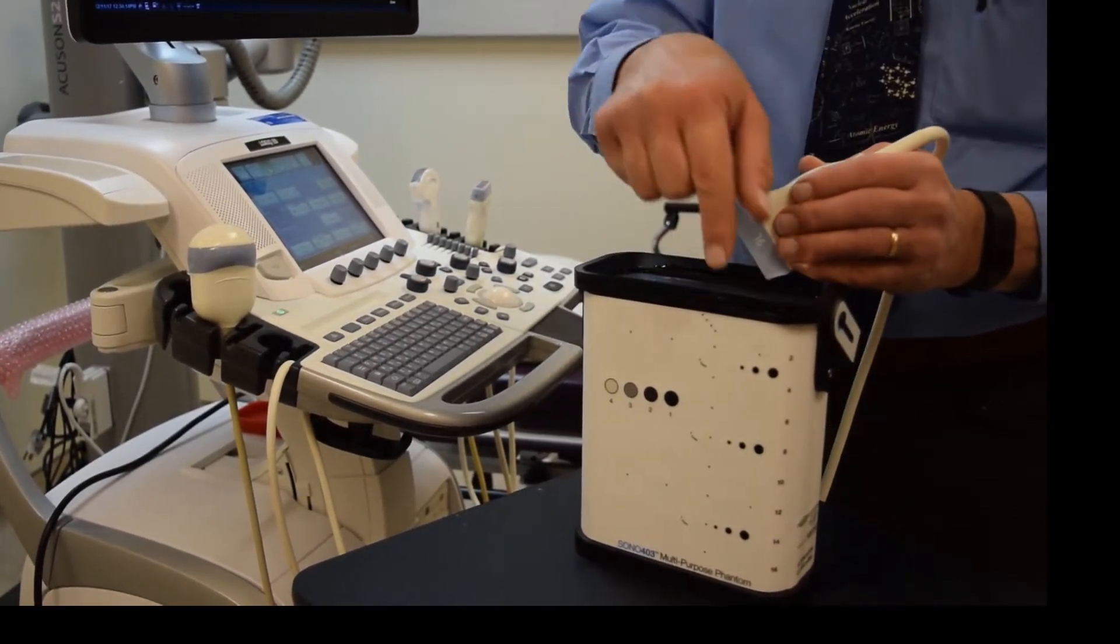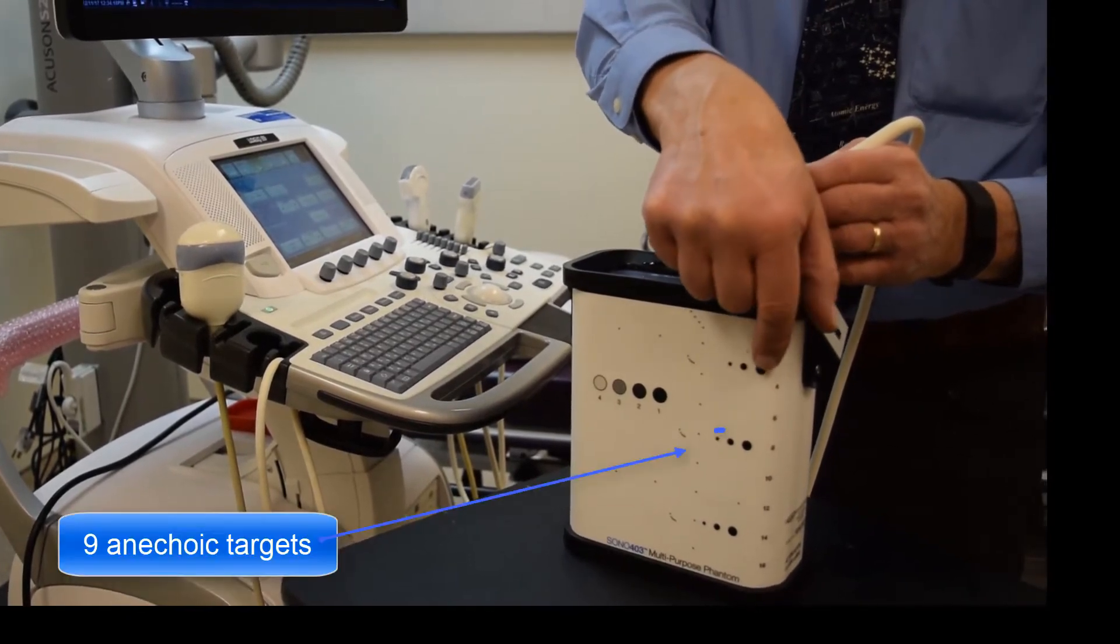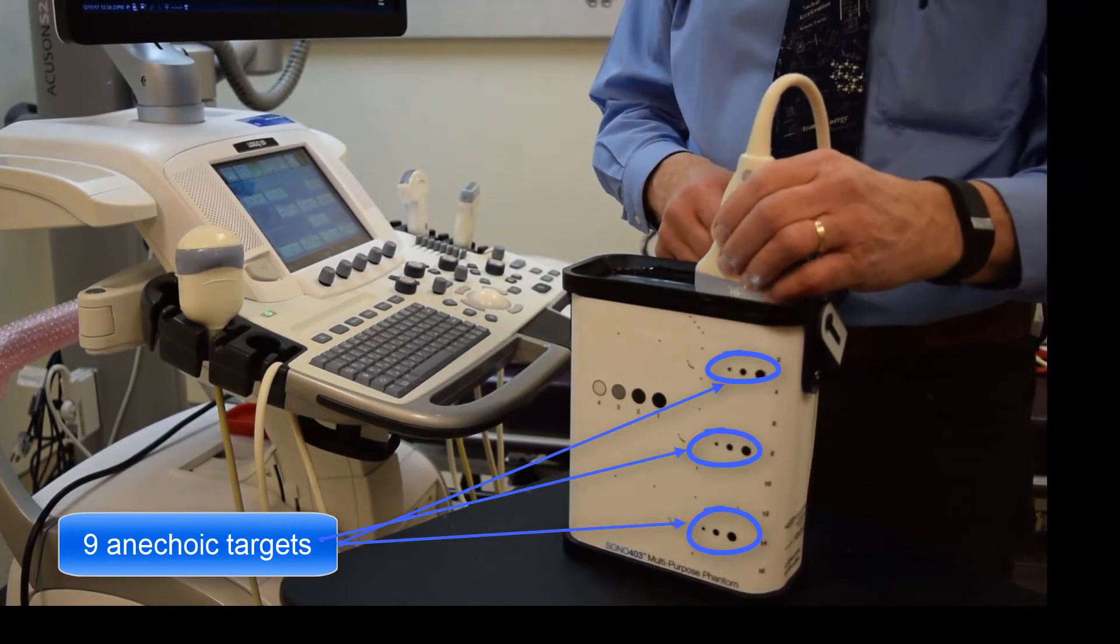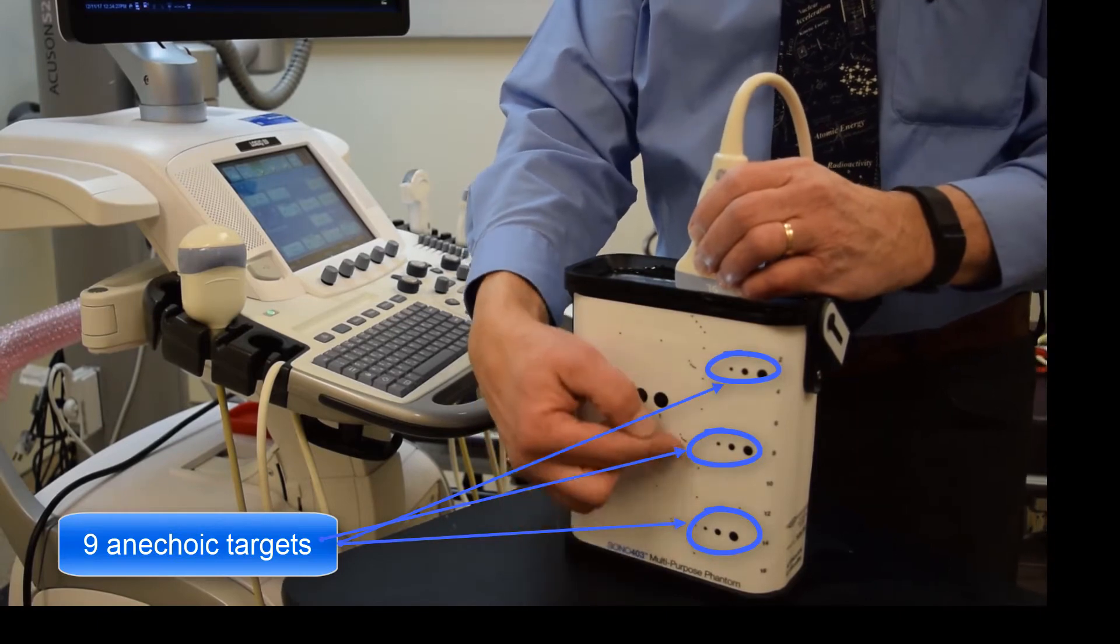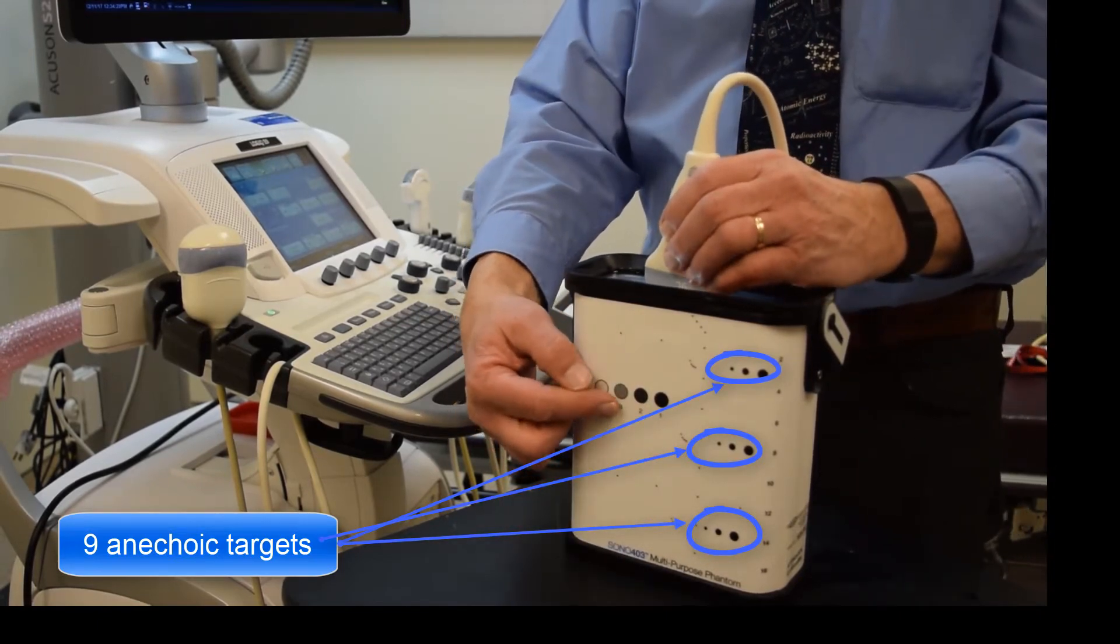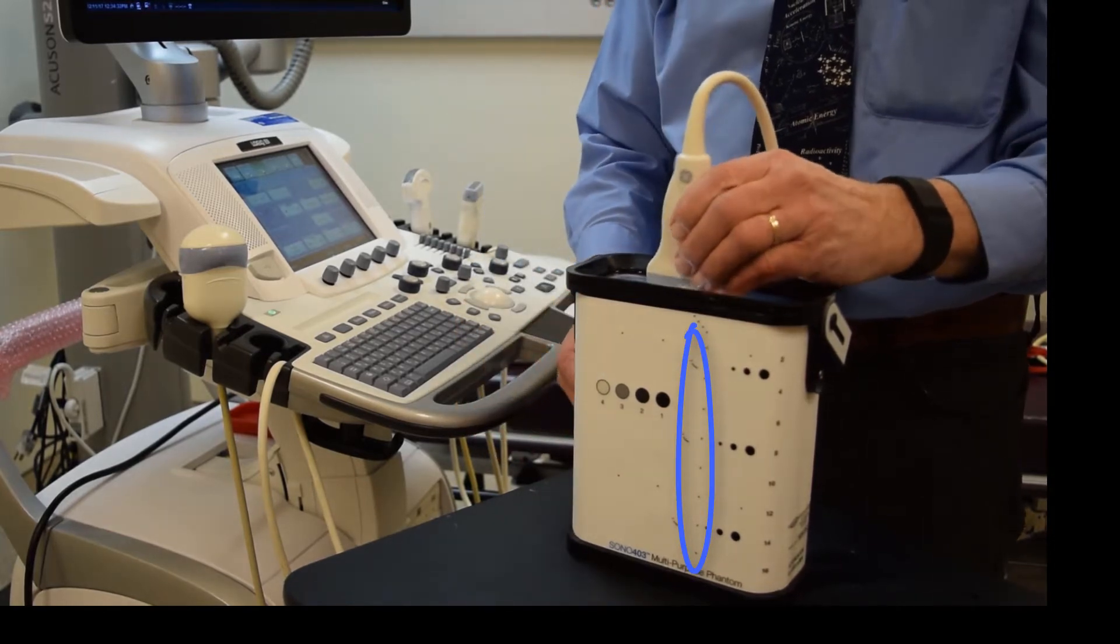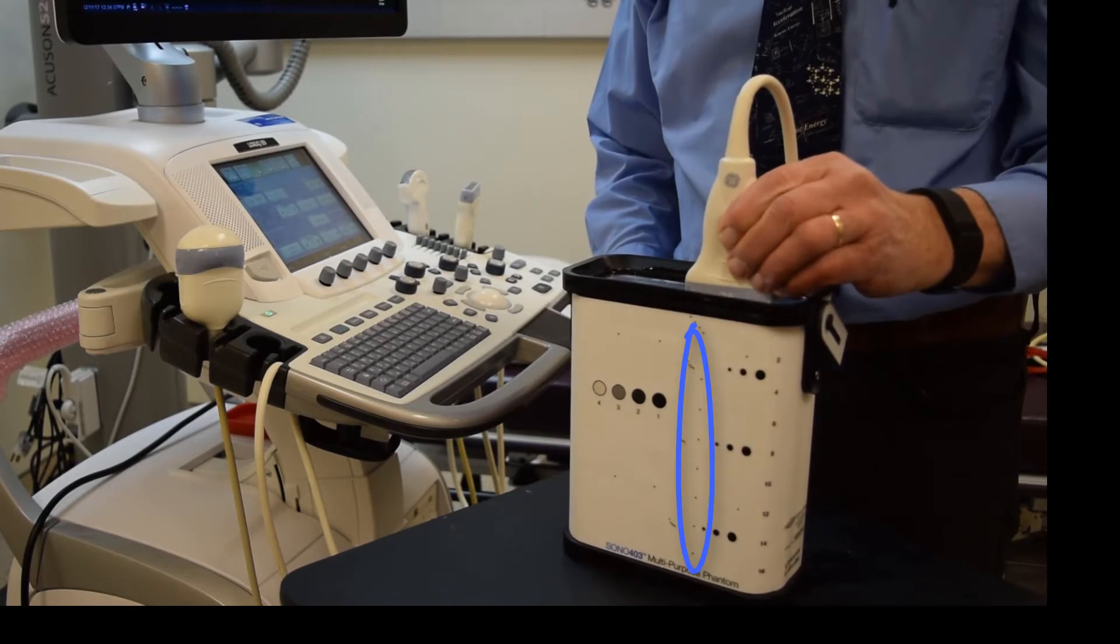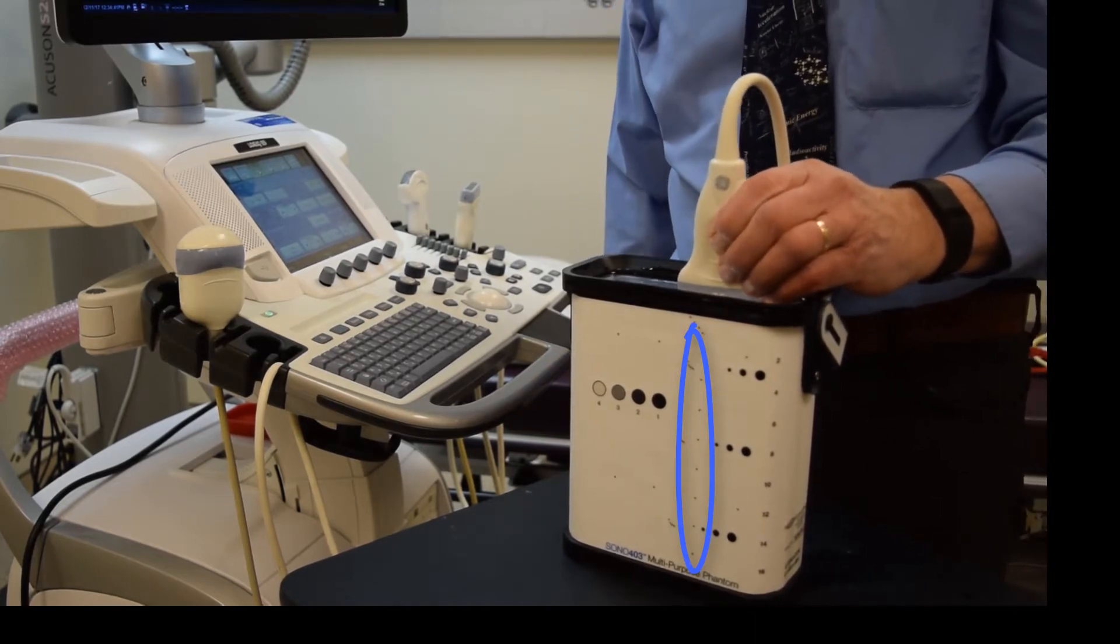There are a number of interesting objects inside the tissue-mimicking material. First, there are three groups of three anechoic cylinders whose axes are perpendicular to the side walls of the phantom. These have different sizes ranging from 6 millimeters to 2 millimeters in diameter. The phantom has a vertical row of nylon fiber targets, also oriented perpendicular to the walls, spaced every 2 centimeters, primarily for distance measurement tests.